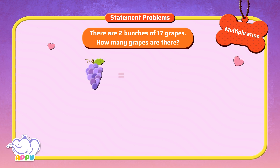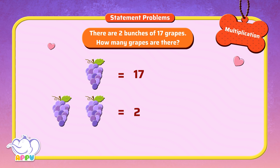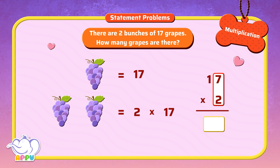One bunch has 17 grapes, so two bunches have 2 times 17 grapes. We multiply: 17 times 2. Step 1: multiply 2 with the 1's digit. 2 times 7 equals 14. We write 4 and carry over 1.